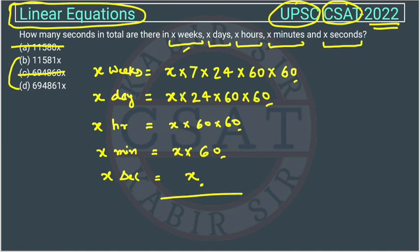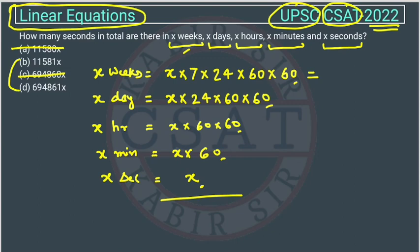If we multiply, the answer will be 604800. I am writing directly, so you have to calculate it. If you will see, this is the answer of this one. So the answer will be near to this one, near to 60,000. Only this figure is near to 60,000. So this will be our answer. Option D is the answer.